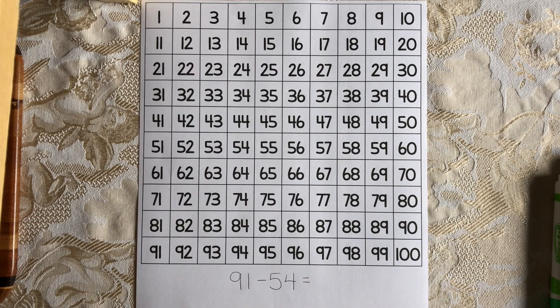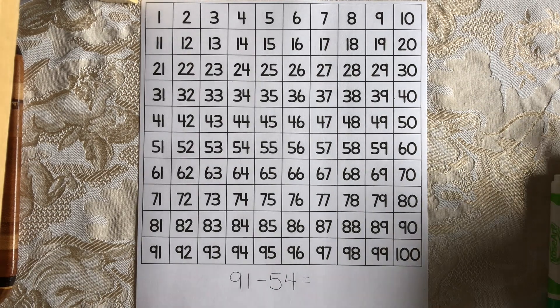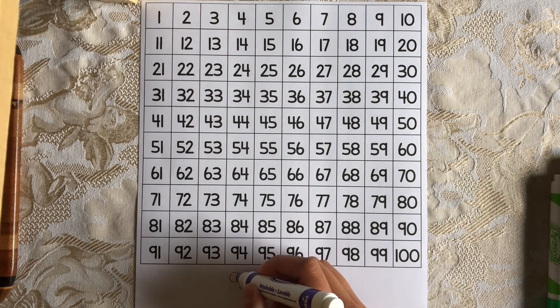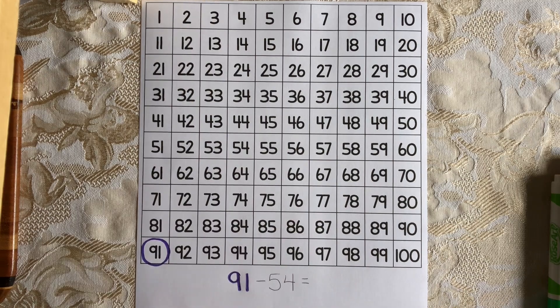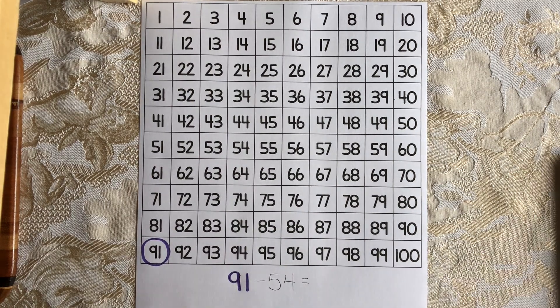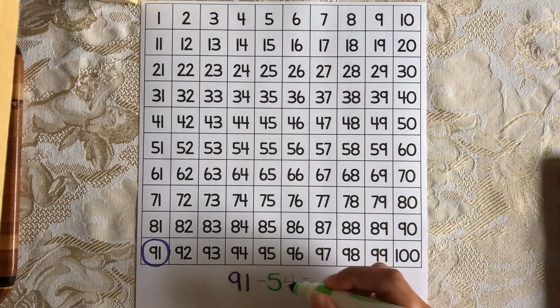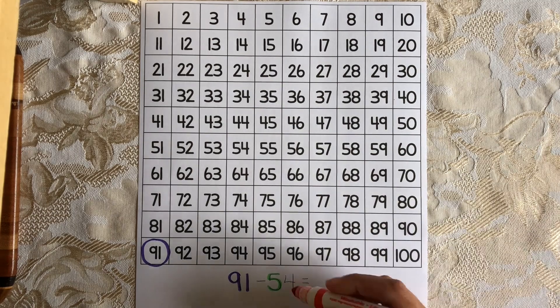Let's do 91 minus 54 on the 100s chart. So I'm going to start with the biggest number, 91, and I'm going to circle that. That's my starting point on the 100s chart. Now we're going to be subtracting 54, 5 tens, and 4 ones.